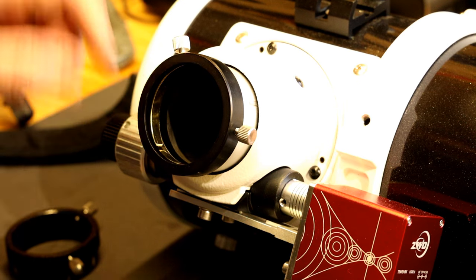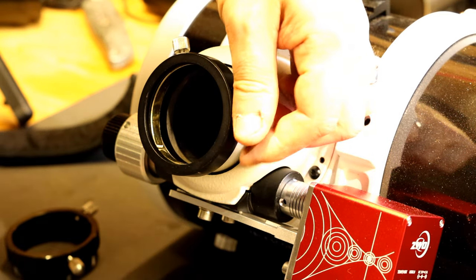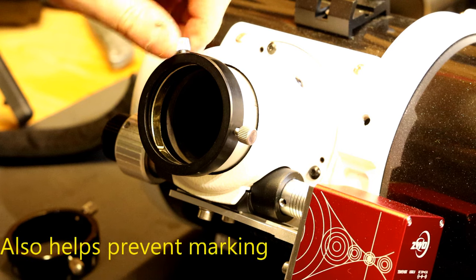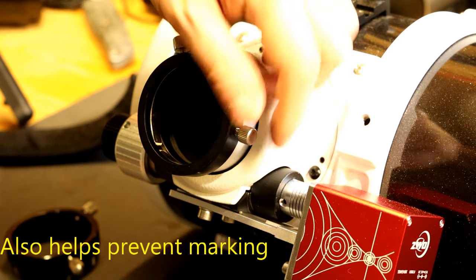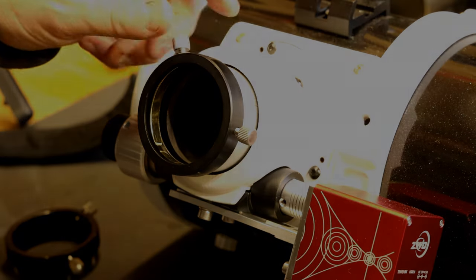I've replaced it with one with a brass ring inside, which basically just gives more even pressure all the way around and is less likely to cause you tilt in your imaging train. So that was one of the first changes I made and wasn't expensive at all.